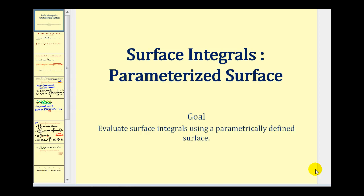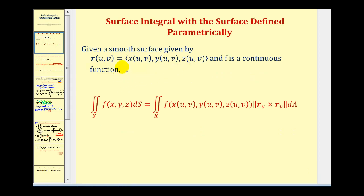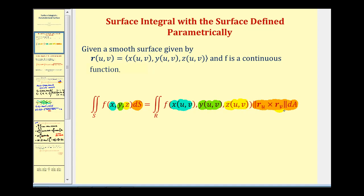Welcome back to a second example of surface integrals where the surface is a parametrized surface. If our surface is given as the vector-valued function r of u and v, we can rewrite the double integral of f integrated over surface s with respect to s as a double integral over the region r in the uv-plane, rewriting f as a function of u and v. The differential ds equals the magnitude of the cross product times da, where da is du dv or dv du. This integrating factor was discussed in the video on the area of a parametrized surface.